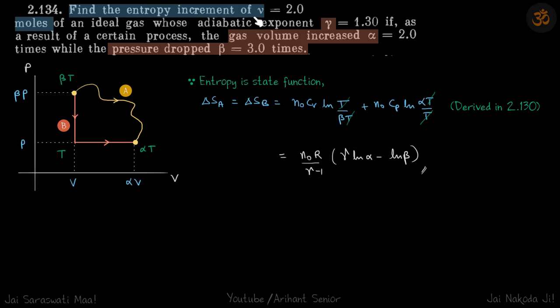Find the entropy increment of ν moles of ideal gas if the gas volume is increased α times while the pressure is dropped β times. They are not given which process it goes through.